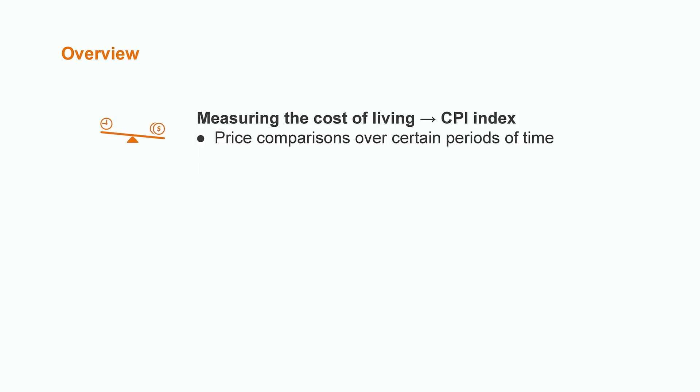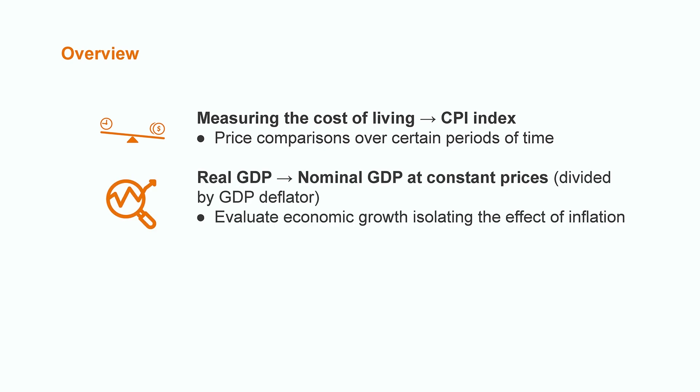Let's do a small overview first. When measuring the cost of living, CPI has shown to be very relevant, since it allows us to establish price comparisons over certain periods of time — for example, establishing the effect of inflation on purchasing power by analyzing the basket of goods. As for real GDP, it consists of the nominal GDP expressed at constant prices, that means divided by the GDP deflator. This enables us to evaluate if an economy grows by isolating the effect of inflation.